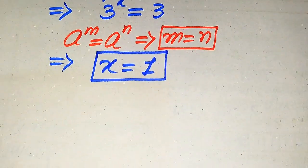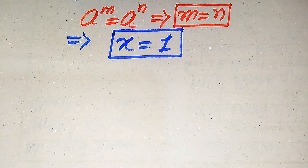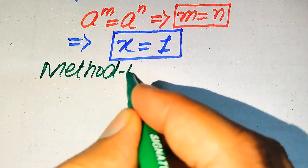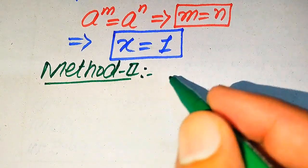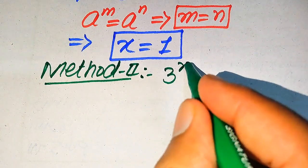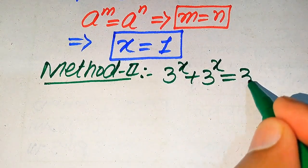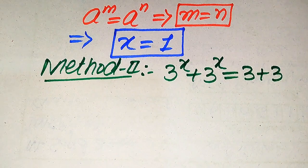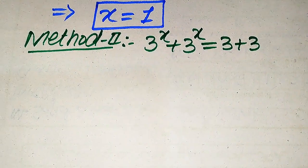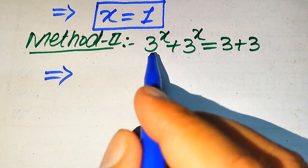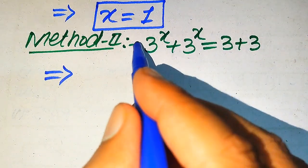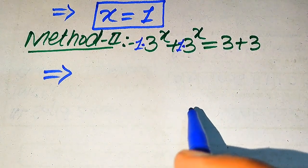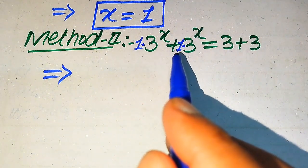This is the root we get from the first method, and now we solve this problem using the second method. In the second method, the given question statement is: 3 to the power of x plus 3 to the power of x equals 3 plus 3. Here I give you another technique — you can see these two same like terms are added together, and when like terms are added and they are variable terms, you just add their coefficients.